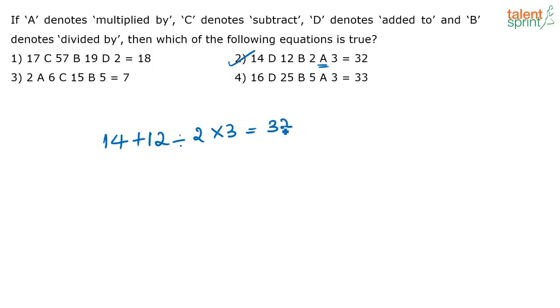Equal to is the same, no symbol. So you have 14 plus 12 by 2, that is 6, 6 into 3 is equal to 32. So here you have 14 plus 18 that is equal to 32 which is the correct one. So the correct answer here is option 2.